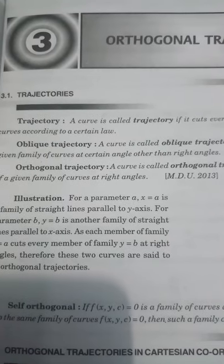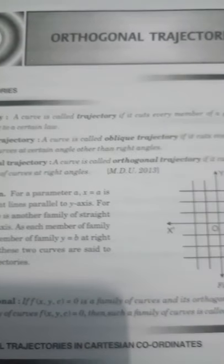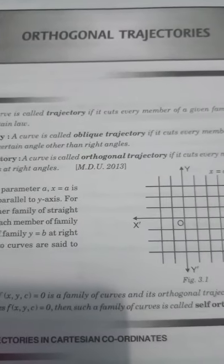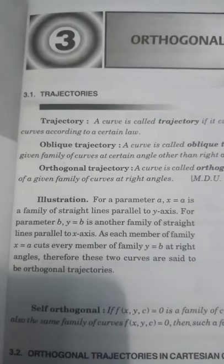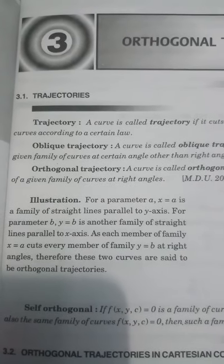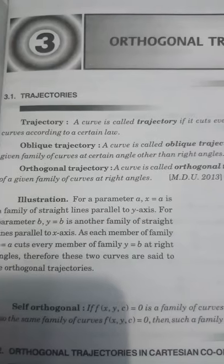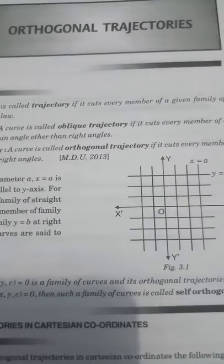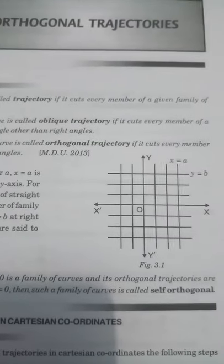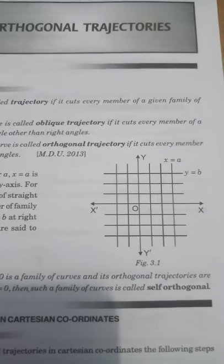Orthogonal trajectory: a curve is called an orthogonal trajectory if it cuts every member of a given family of curves at right angles.